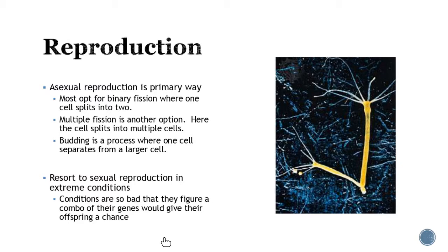Everyone has to go through reproduction and these guys are primarily going to go through asexual reproduction. They're most often going to opt for binary fission where they're just going to split into two. They'll copy everything and go into two cells. Some of them will go through the process of multiple fission where they're going to split into multiple cells. Then they'll go through the process of budding, which is where one cell separates from the larger cell. Here's the larger cell and here we have a smaller one about to break off and bud off.